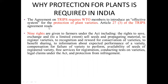Under TRIPS Article 27 Subsection 3(b), WTO members must create an effective system to protect plant breeders. According to this, nine rights are given to farmers including: the right to save, exchange, sell, and propagate registered varieties; reward for conservation; benefit sharing; compensation for failure of a variety to perform; availability of registered varieties free of cost; services for registration; conducting tests on varieties; and protection from infringement.